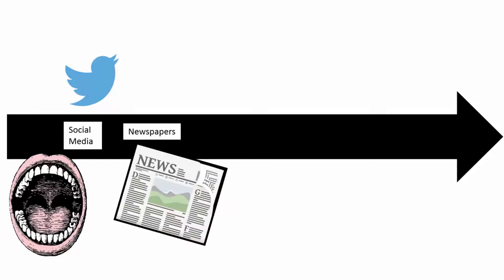In the week following the event, journalists dig up any background surrounding the event and interview experts, officials, and people closer to the event. They begin to fill in the details and try to explain the event in context.